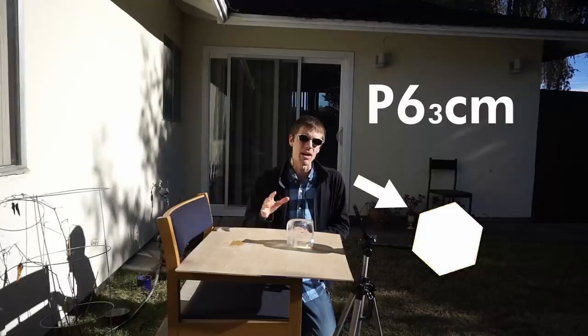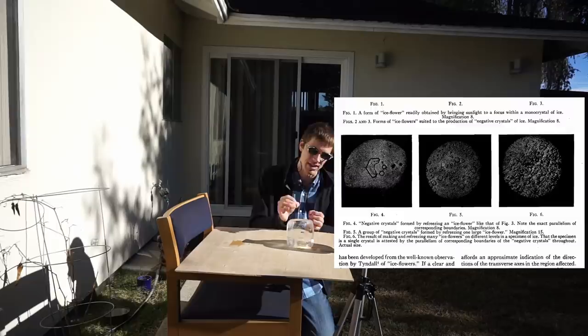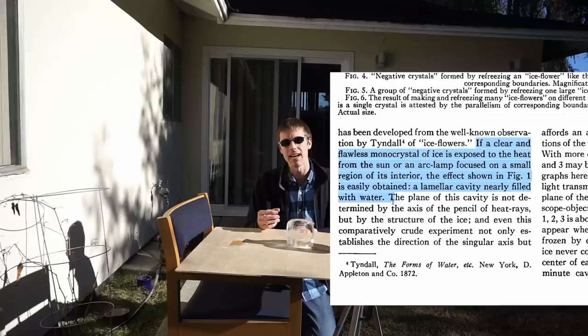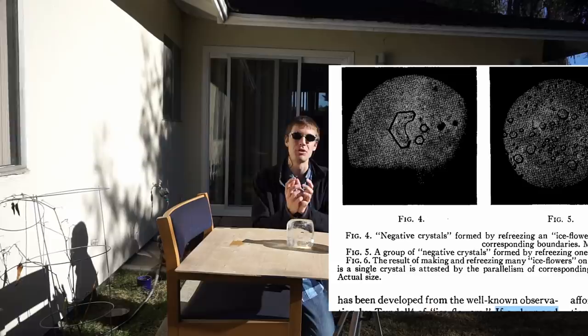I read a paper a while ago where they actually used a lens like this with a bright arc lamp or the sun to heat up a spot in the center of a block of ice — like if you could bring it to a focus while it was in the ice — and they used this to melt it from the inside out. They made a little bit of a void inside this block of ice. And when that void refroze, it actually formed a tiny little hexagon: a little clear hexagonal prism of void inside a block of ice. I thought, that's really cool, I should try to do that.